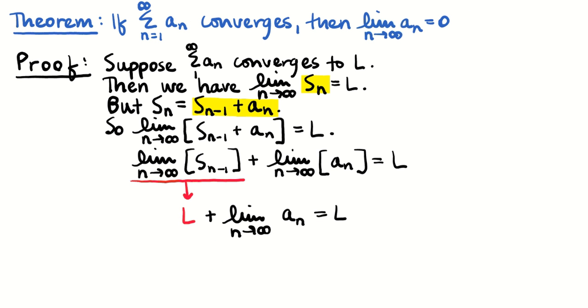But this means if I subtract L from both sides of the equation, that the limit as n approaches infinity of the terms of the series must be zero. Which is what I hoped to show you.